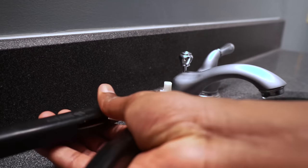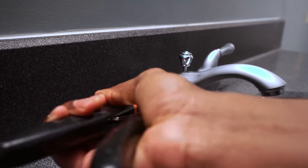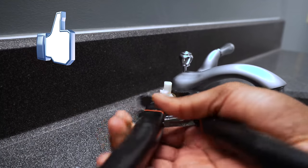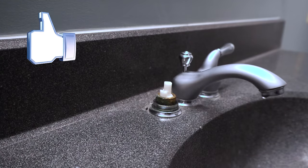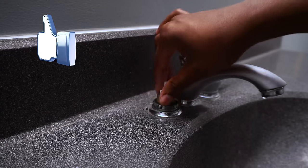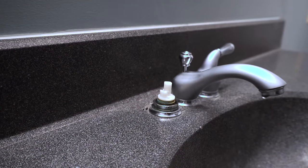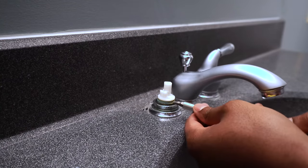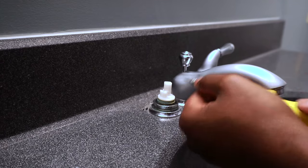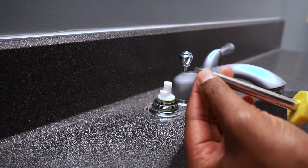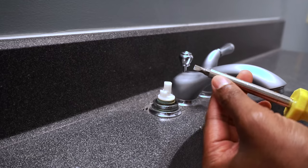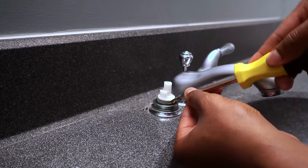Now you can take the pair of pliers to remove that nut. Once loosened, just remove it with your hand. Now you're going to want to take your flathead screwdriver and wedge it in between the cartridge and the metal housing. Be mindful that you don't want to scratch the metal housing because you could strip some of the threads.